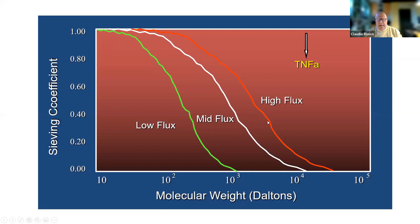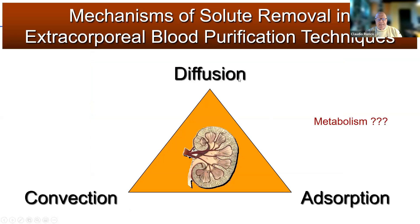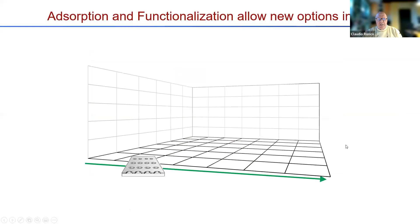Different membranes have been created with different sieving properties, trying to mimic the sieving coefficient curve of the human glomerulus. But still, we are far from that. In fact, some molecules that are important for acute and chronic kidney disease are retained in the body. However, we discovered some years ago that the membrane can be an active component and can indeed be utilized to absorb some substances. This was one of the first publications we did, showing that TNF-alpha could be absorbed on the internal surface of the membrane. So the mechanisms we use today are basically diffusion, convection, and absorption, waiting for possible bio-artificial organs that include metabolism.